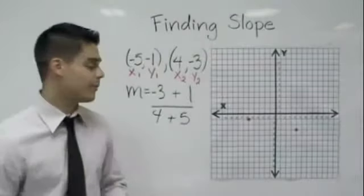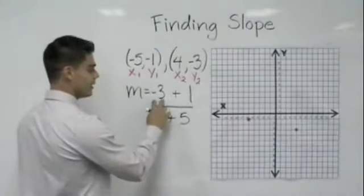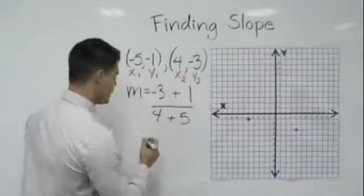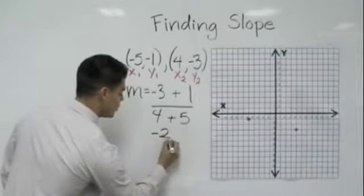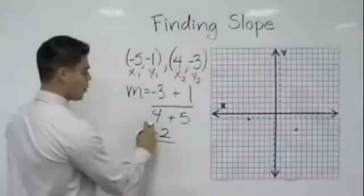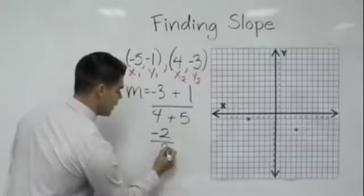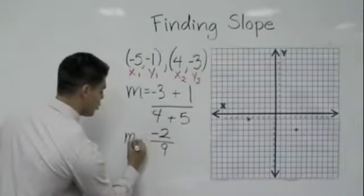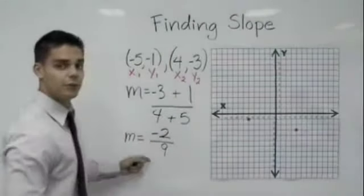That is a lot easier to think about. Now I have -3 plus 1 that gives me -2 over 4 plus 5 that gives me 9. So my slope or my m equals -2 over 9.